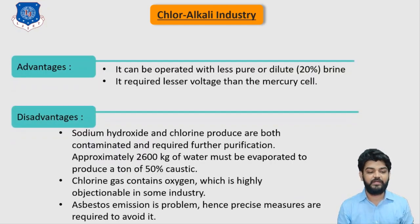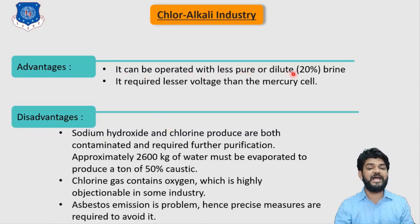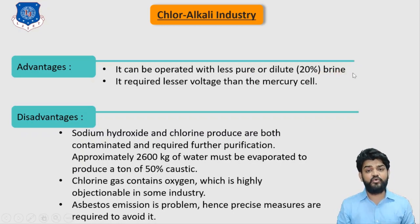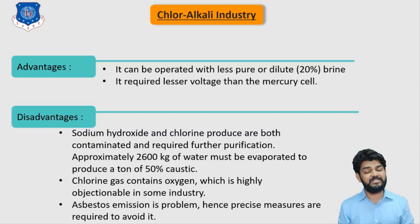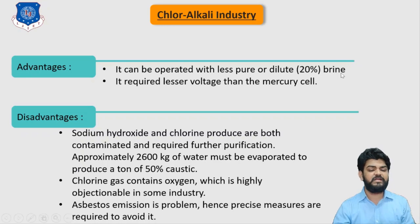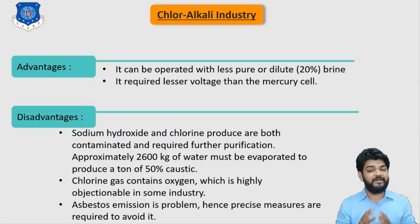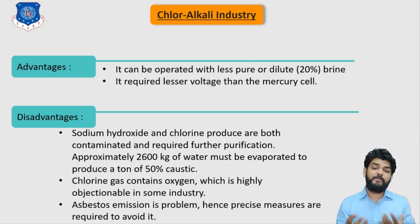Now let's understand the advantages and disadvantages of the diaphragm cell. The first advantage is that it can be operated with less purified or diluted brine — we do not require a highly concentrated brine solution and can even use 20% concentrated brine to get NaOH. It also requires lesser voltage than the mercury cell, so the electricity needed to carry out electrolysis is significantly less.